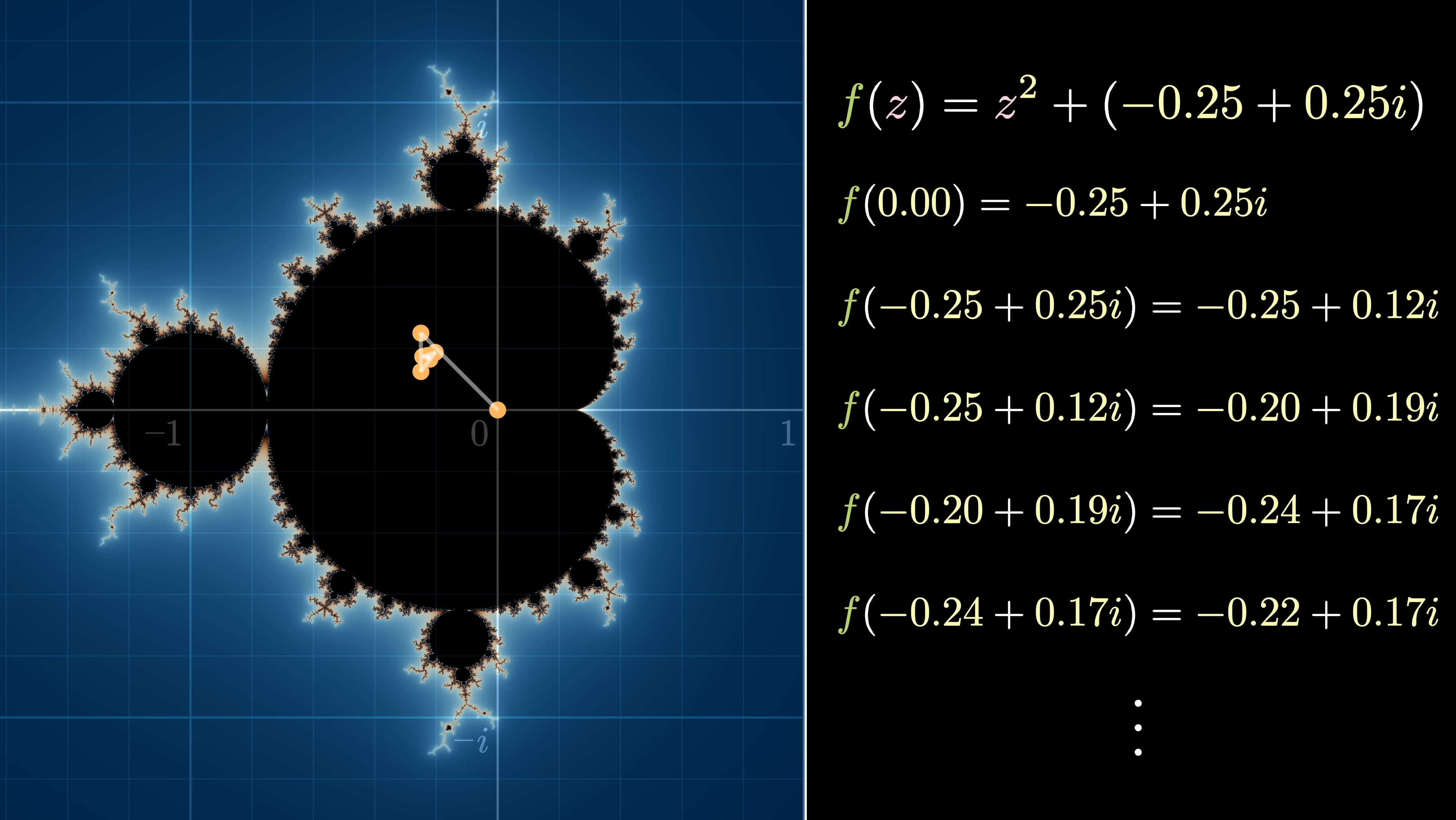We color these pixels that stay constrained black and consider them part of the Mandelbrot set. As for the others, we color them based off how many steps it takes to blow up, giving us a nice gradient effect.